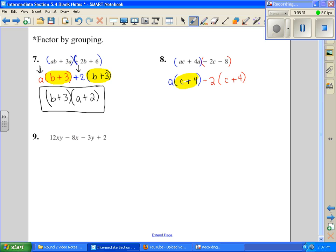Once again, our parentheses matched identical. So it becomes one of our factors, C + 4. And then we have A - 2. What's on the outside is our other factor.